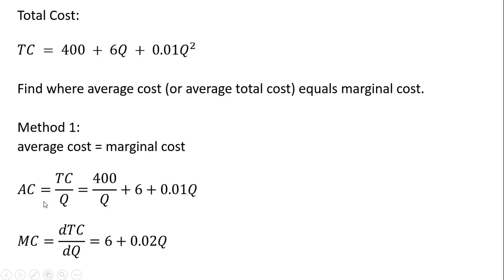So we got our average cost equation and marginal cost equation. Let's set them equal to one another. So we got one equation and one unknown. We're just going to solve for q.